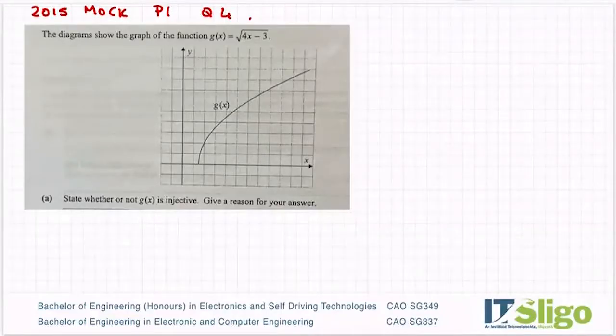Okay, 2015 mock question on functions. The diagram shows the graph of the function g of x equals root 4x minus 3. Part A: state whether or not g of x is injective, give a reason for your answer.